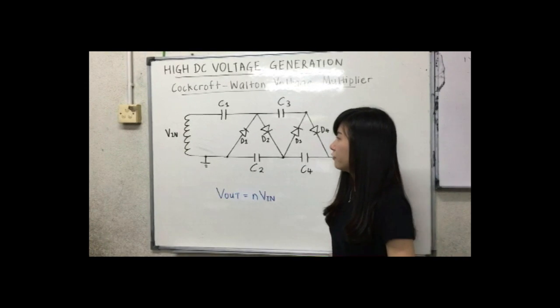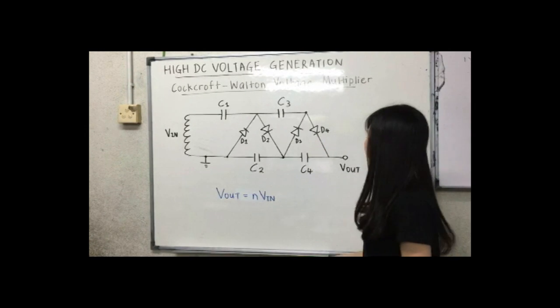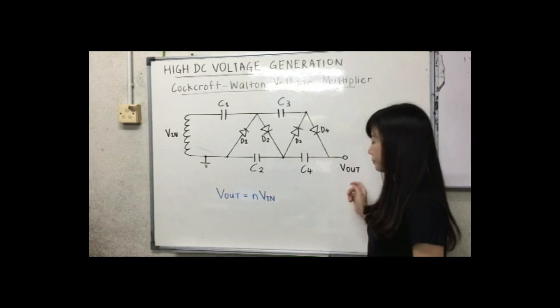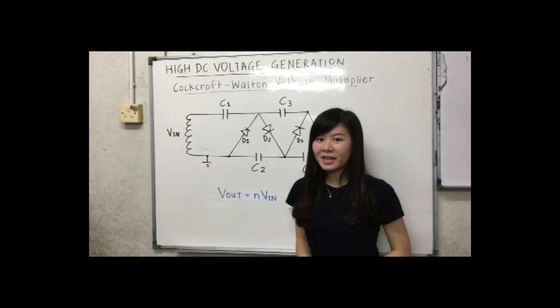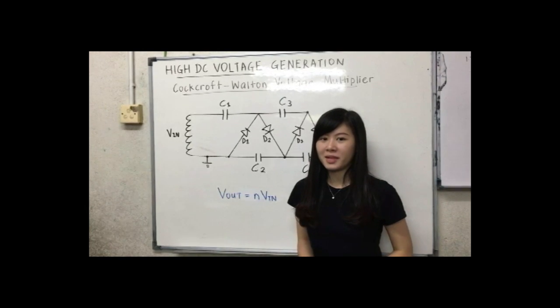For example, if you feed in 5V as the input here, you will get 10V at the output here. Now you have the rough idea of what is Cockroft-Walton voltage multiplier.